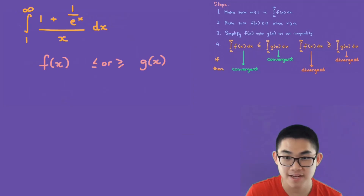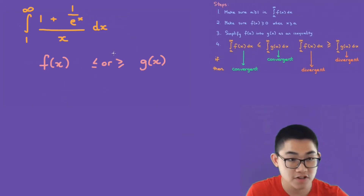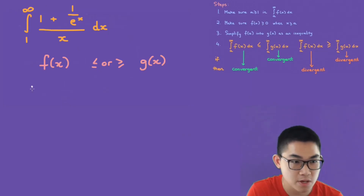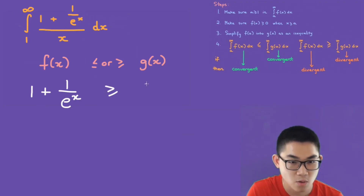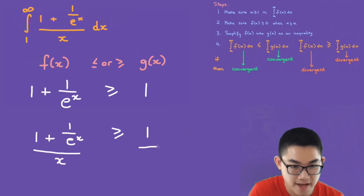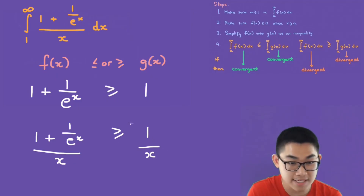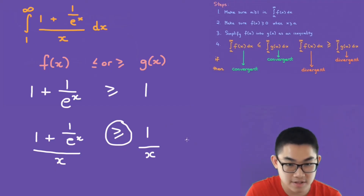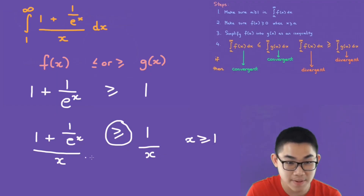Step three: simplify f of x into g of x as an inequality. Starting at the most complicated place — one plus one over e to the power of x — we say this is larger than one. To turn this into our function we divide both sides by x, giving us one plus one over e to the power of x over x is greater or equal to one over x. The inequality sign stays the same because x is from one to infinity, so x is always a positive number.